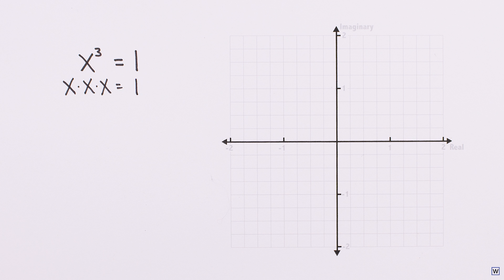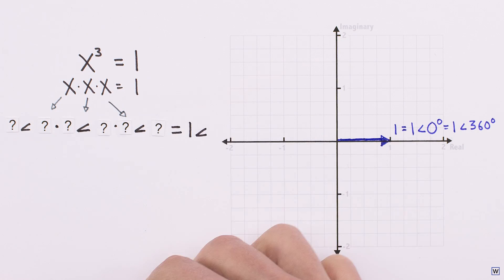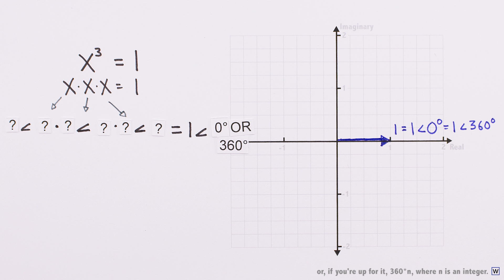Let's think about this problem using the polar form of complex numbers we discussed last time. We can think about 1 in the complex plane as the number with a magnitude of 1 and an angle of 0, or 360. When we multiply numbers in the complex domain, their magnitudes multiply and their angles add.